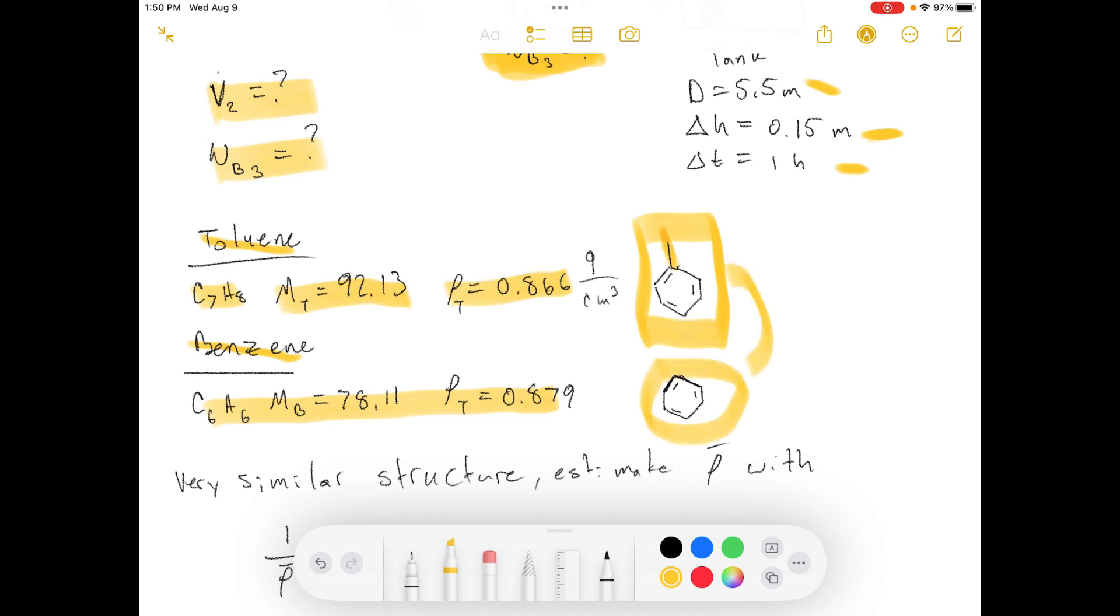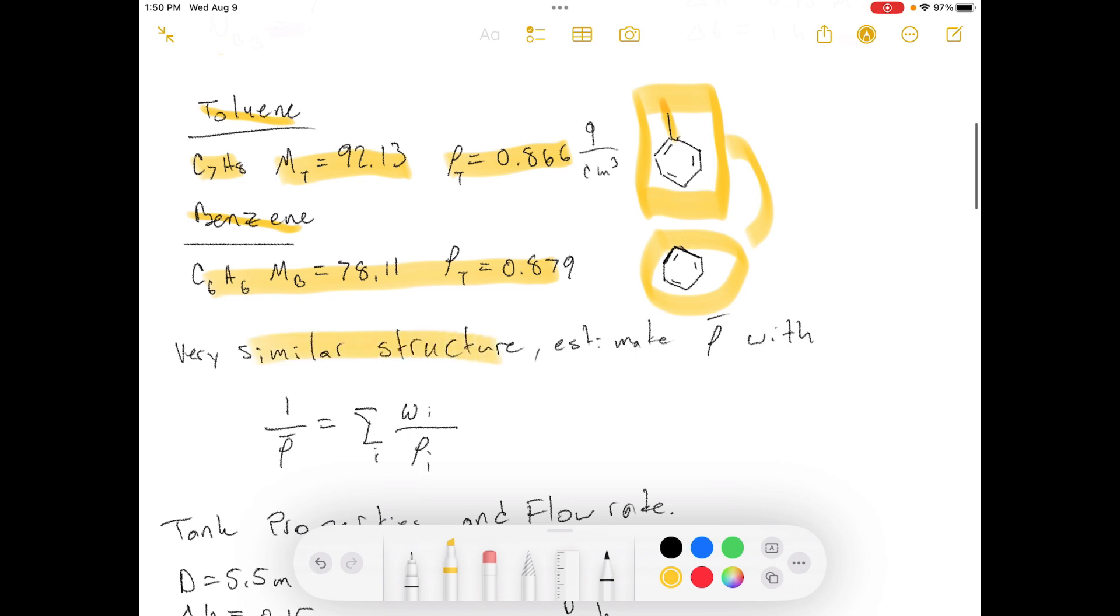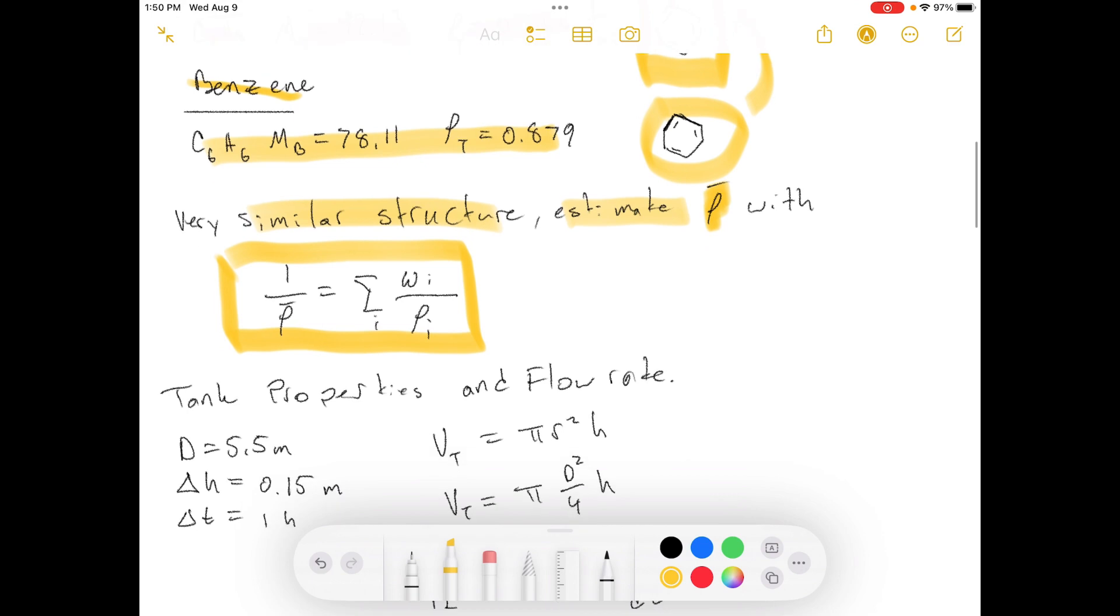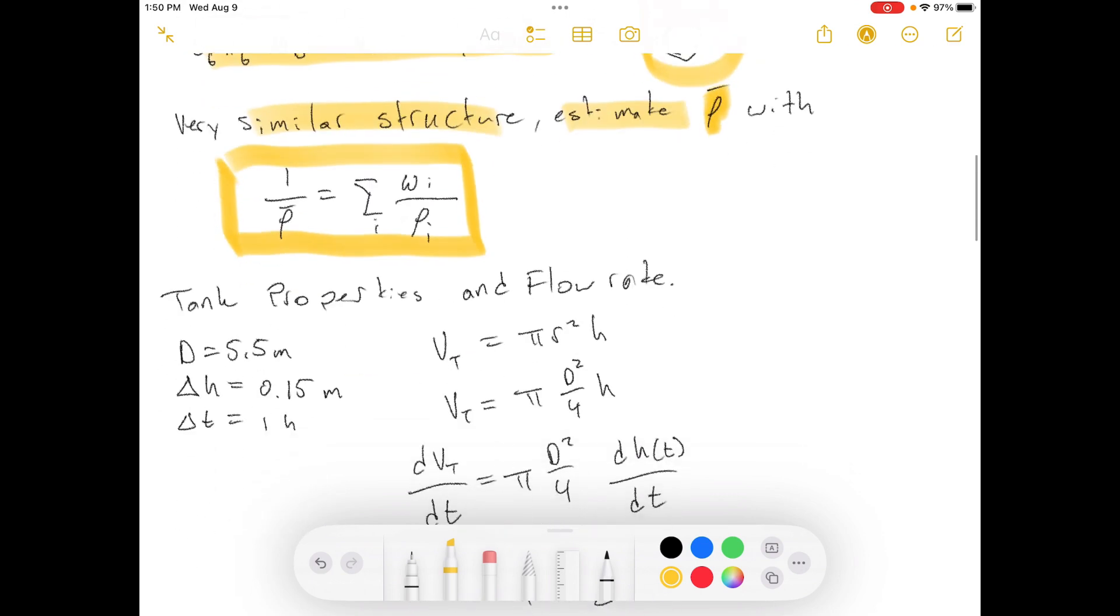They're a very similar structure. So, we estimate what the combined density of the solution is with this estimation. This estimation is calculated based off of the fact that, you know, if you add these together, that the volume is additive. And it doesn't shrink or expand when you add these things together. You don't gain volume or lose volume, basically. Volume is conserved, is what we're going to see.